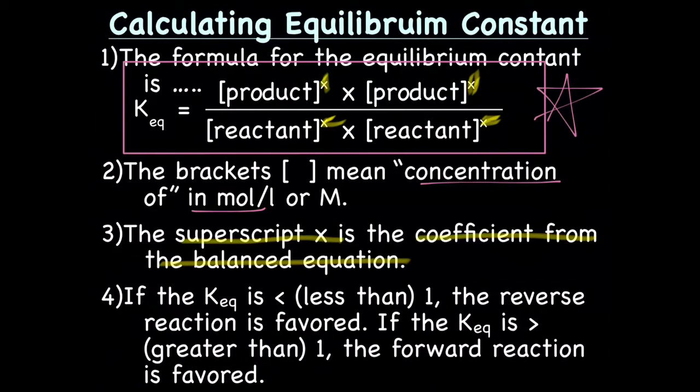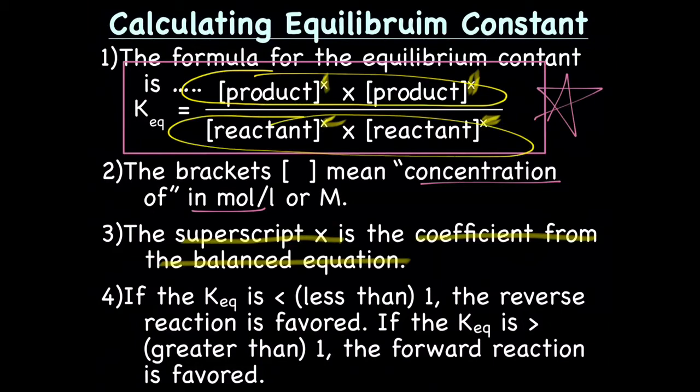Before we move on to point four, I want to point out that not all reactions have two products and not all reactions have two reactants. On the top, you put all of the products, the concentration of each product to the power of its coefficient and multiply them. If there's only one product, you don't multiply anything. If there's ten products, you multiply all ten. The same with the reactants.